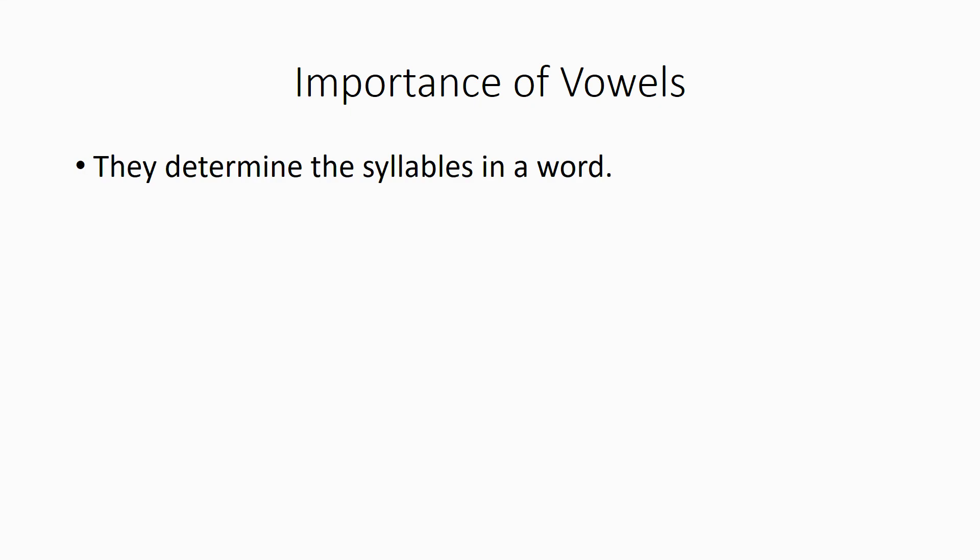Now, why are vowels important? Number one, they determine the syllables in a word. You may have had your teacher in the past teach you to put your hand under your chin, and however many times it moves down, that's a syllable — or to clap it out. But that's not how we determine syllables. The actual way we do it is by looking at the vowels. In the later videos in the series, you'll see how to determine how many syllables a word has. If you want to write poetry, this is important, because poetry in English and even Spanish and many other languages is extremely dependent on syllables.